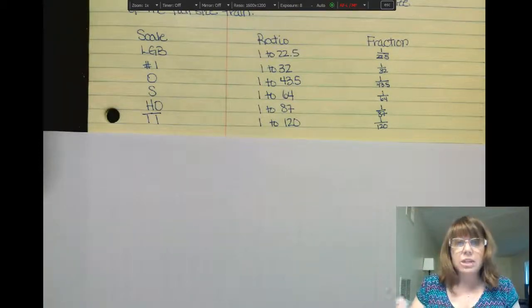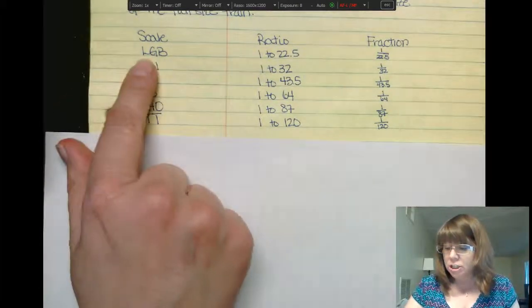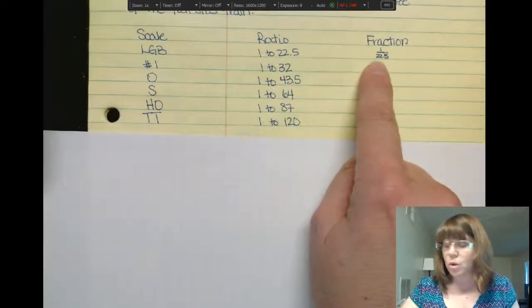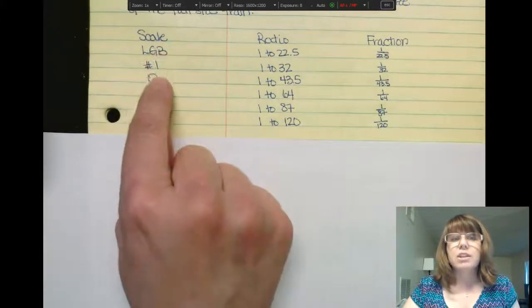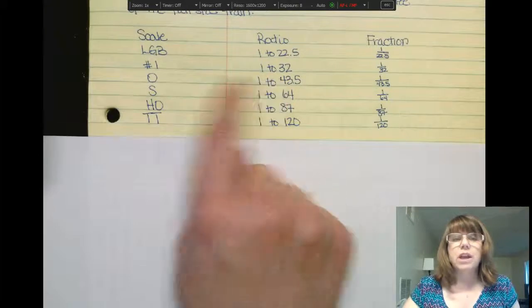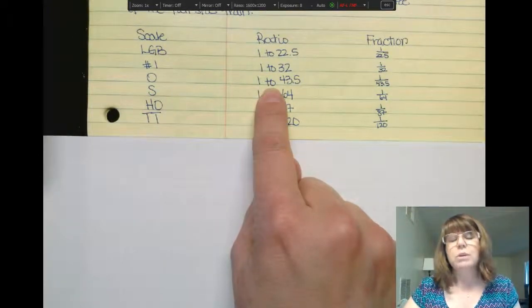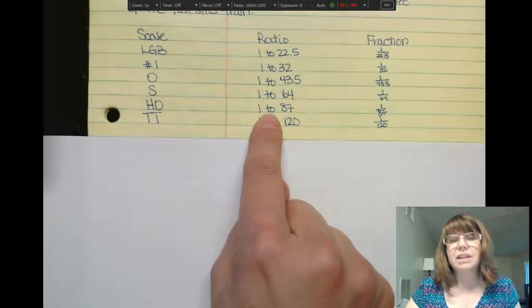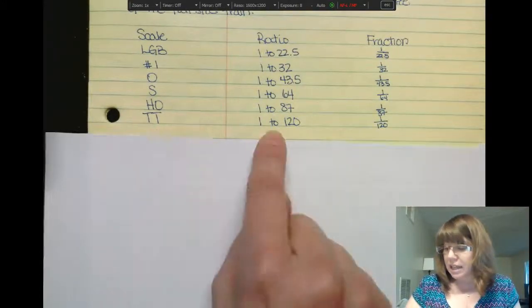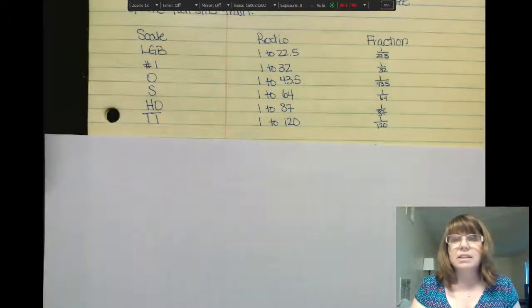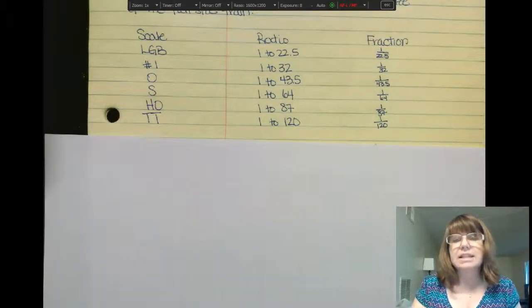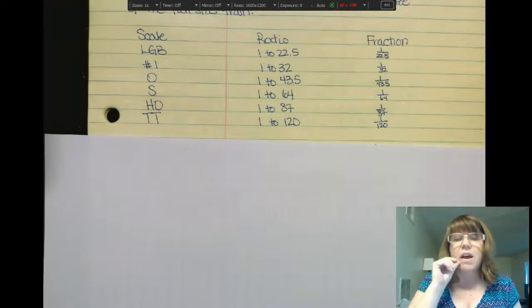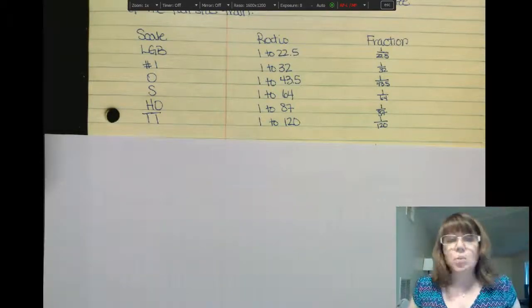So the LGB scale is 1 to 22.5. As a fraction, you can see it's 1 over 22.5. The number 1 scale is 1 to 32. The O scale is 1 to 43.5. The S scale is 1 to 64. The HO scale is 1 to 78. The TT scale is 1 to 120. So that means that train is 1/120th of the size of a real train. So you can see each of these scales, they get smaller, smaller, smaller, smaller, according to the real, as a proportion of the real train.